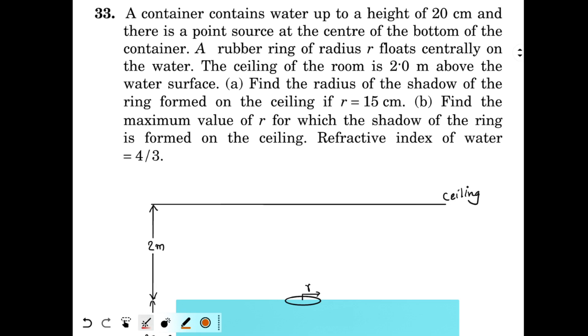You will see this question. This is question number 33 from chapter number 18 of NC Vermont. A container contains water up to a height of 20 cm. There is a point source at the center of the bottom of the container. A rubber ring of radius r floats centrally on the water. The ceiling of the room is 2 meters above the water surface.